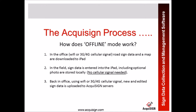How does offline work? When you start in the office you must have a Wi-Fi signal, with which you would download road sign data and map areas. Then in the field, in the offline portion, you would edit and add new signs, and that data would be stored locally — no cellular signal needed. Finally, back in the office with Wi-Fi, you would upload all that new and edited data.